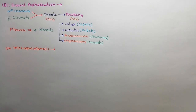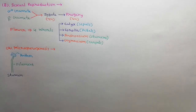We will discuss about microsporogenesis. In crop plants, microspores are also called pollen grains. These microspores are produced inside the anther of the stamen. Each stamen has two parts: anther and filament.